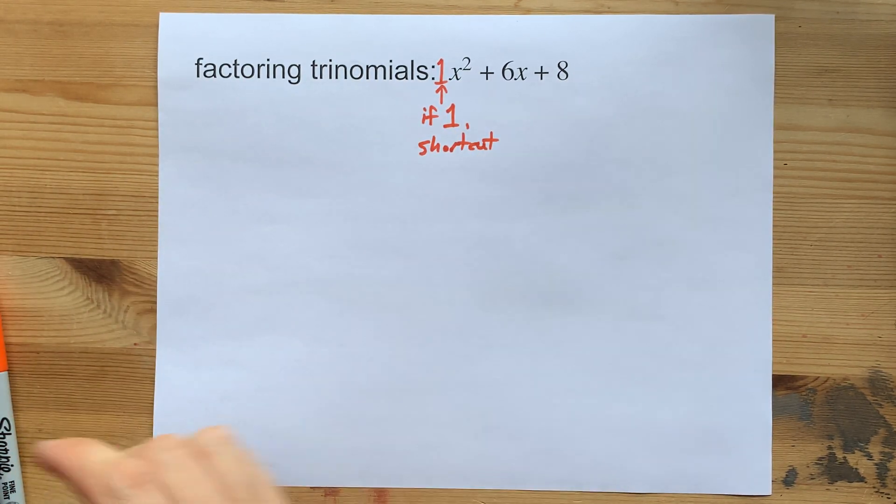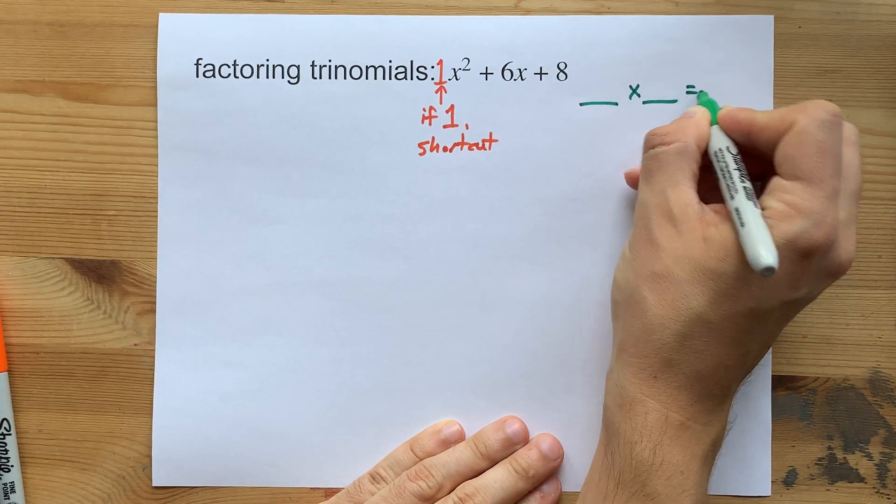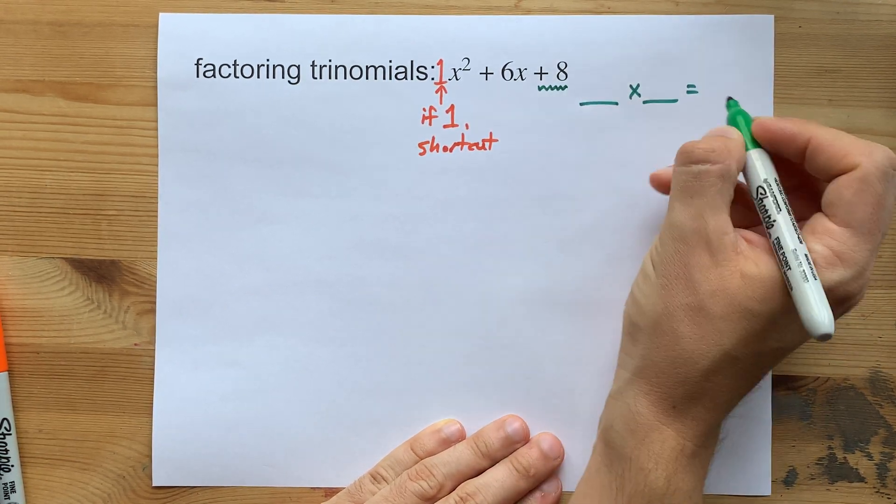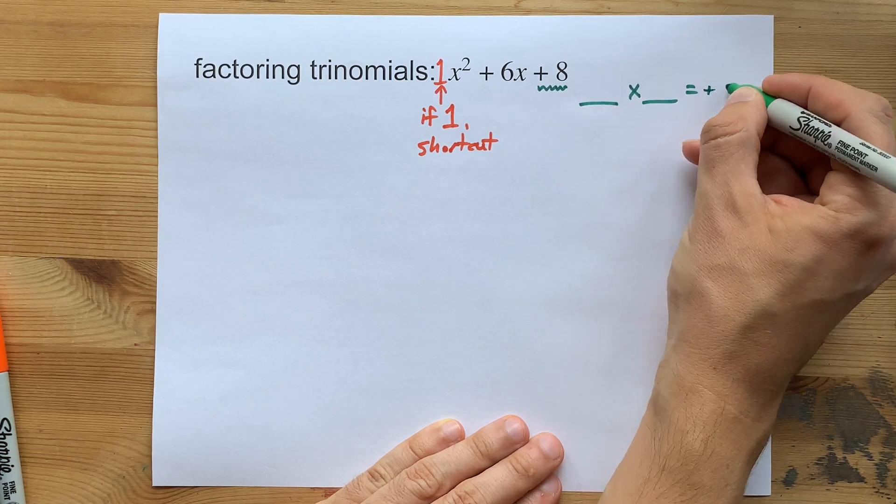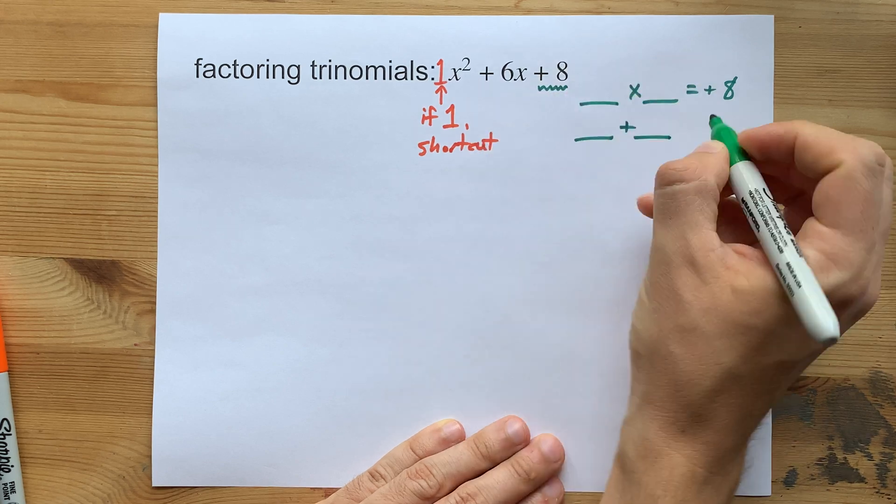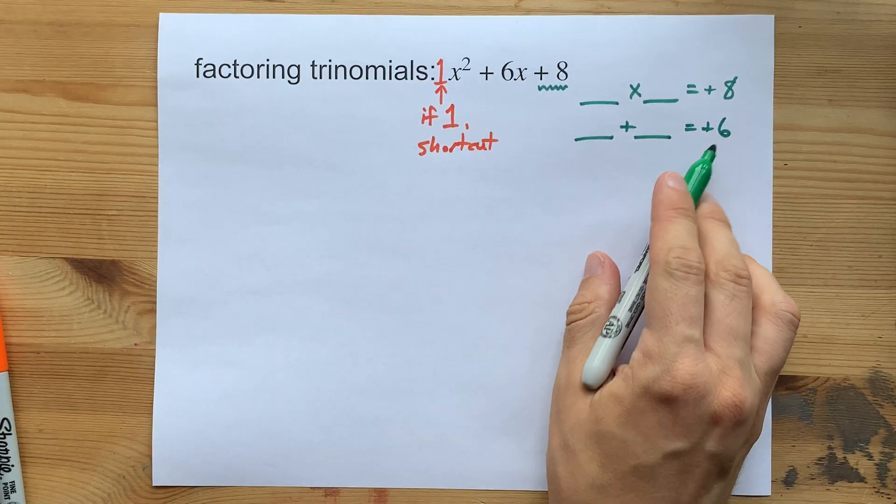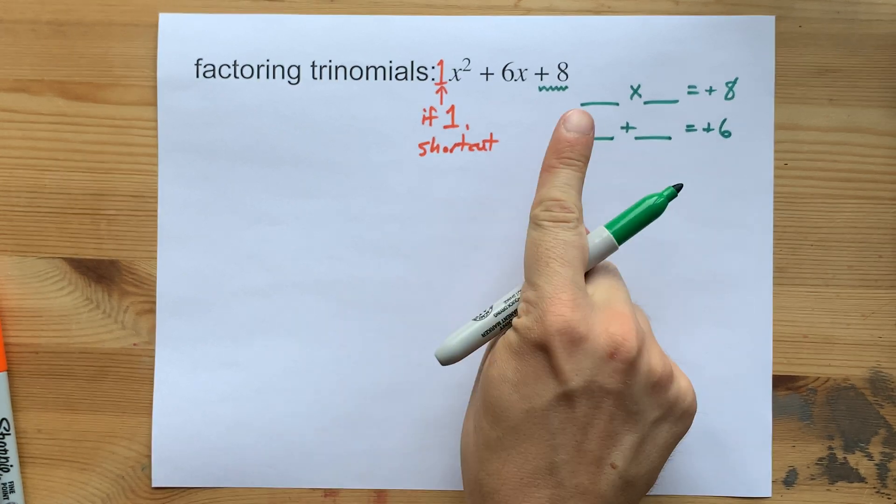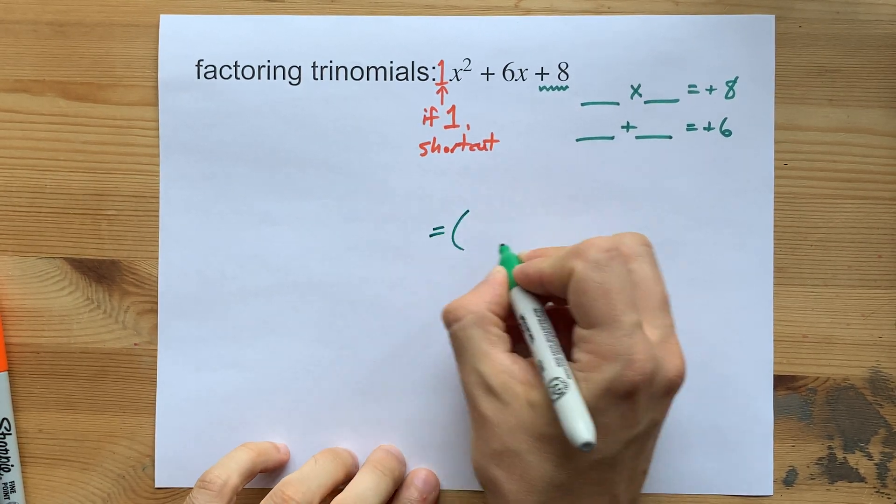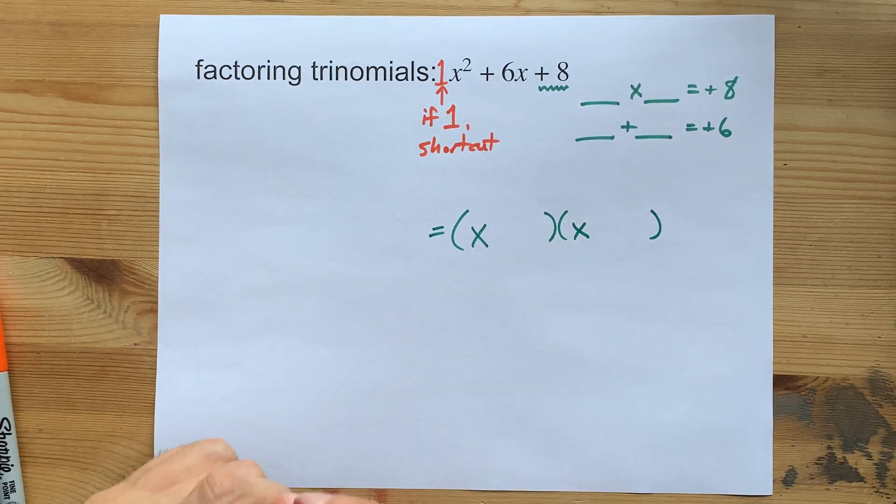The shortcut is that you need two numbers that multiply to make the third number that you're given, in this case positive 8, and that have to add to make the middle number, positive 6. If you can find those two numbers, I guarantee your answer is x plus one of them times x plus the other.